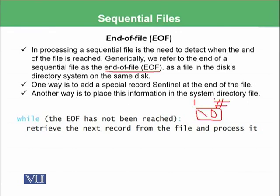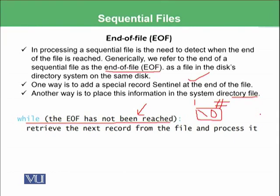Another way is to place this information in the system directory file — you can put this information into the system directory file where you are maintaining which record is saved in which sector and which track. In that file, you can store that a particular record is the last record and there is no further record after it. Normally, when you want to retrieve information from a file, you use a loop: while the end of file has not been reached, retrieve the next record and process it. This loop executes until the sentinel is reached or the directory file indicates that the end of file has been achieved.